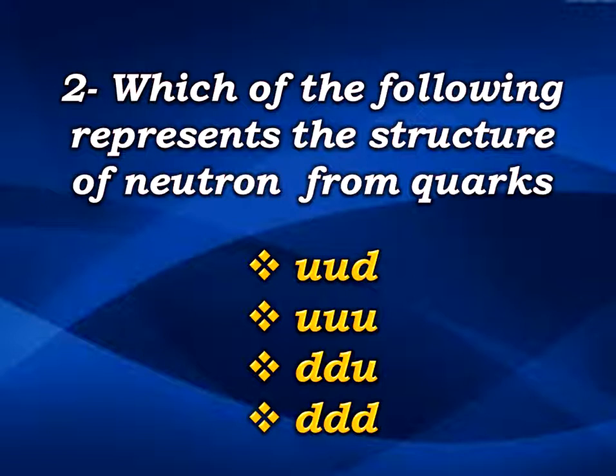The next question asks for the quark structure of the neutron. The options are uud, uuu, or ddd. We can eliminate uuu and ddd. The correct answer is 'ddu' — down, down, and up quark — which are the three quarks found inside the neutron.